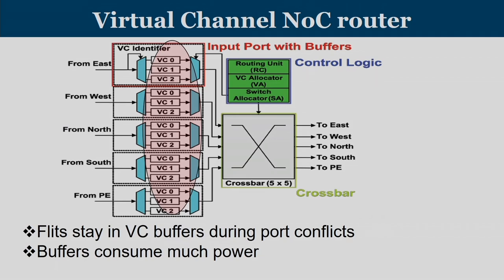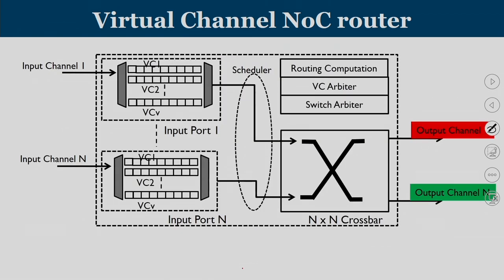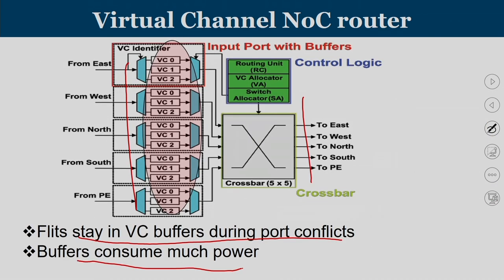We know that this is the general structure of an NOC router, where we have buffers which we call virtual channels, and we have a crossbar through which flits travel. Flits stay in virtual channel buffers whenever there are port conflicts, and these buffers are going to consume much of the power. Buffers are power hungry circuits.